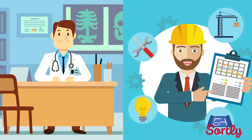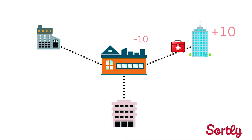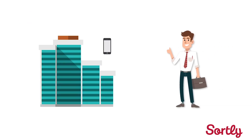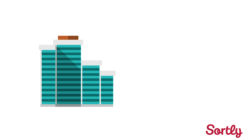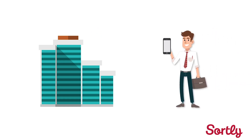Say you run a medical office or construction company and you need to keep tabs on supplies and equipment across multiple locations. Or maybe you manage your office operations or IT department, and your employees borrow equipment on a daily basis. Sortly's flexible system will ensure you're always up to date on what you have, where it is, and who has it.